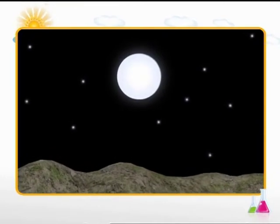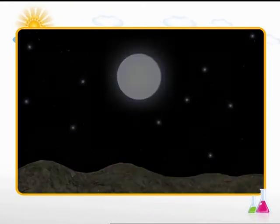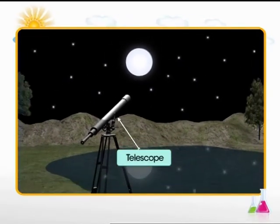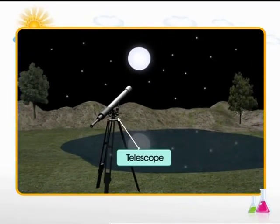The twinkling takes place due to the atmosphere of the earth. Planets are celestial objects which do not twinkle. Most of these planets are not visible to our naked eyes. We use a telescope to view the planets.